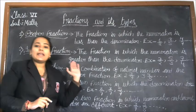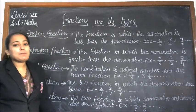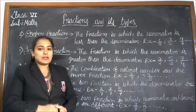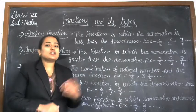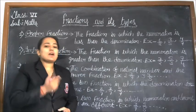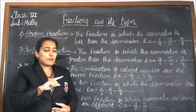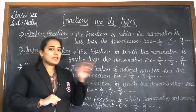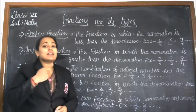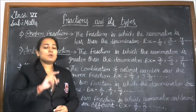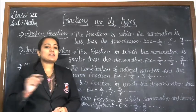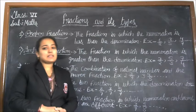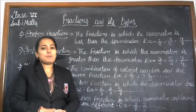The second one is improper fraction. An improper fraction is just the opposite of a proper fraction. In a proper fraction the numerator is less than the denominator, but in an improper fraction the numerator is greater than the denominator. So, the fraction in which the numerator is greater than the denominator is known as an improper fraction.